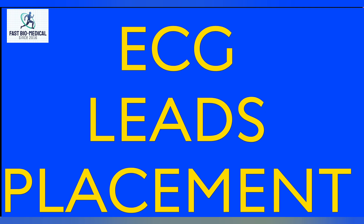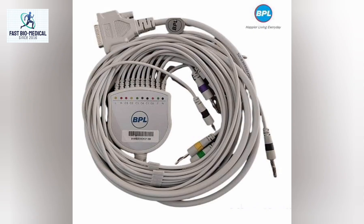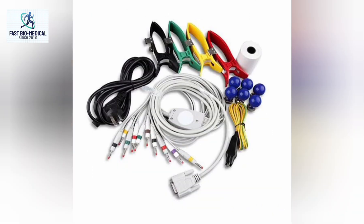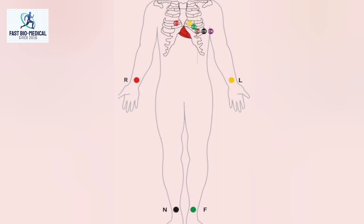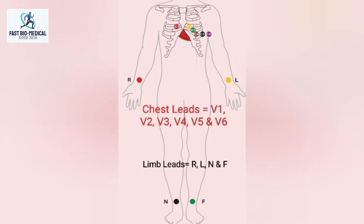Today we are going to learn how to connect the patient cable of ECG correctly on a patient. Basically there are 10 physical cables to connect with a patient in ECG to get the acquisition. As we see in the video, these are divided into two categories: chest electrode and limb electrode.